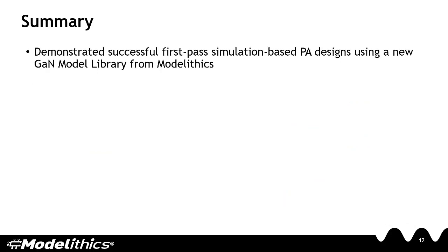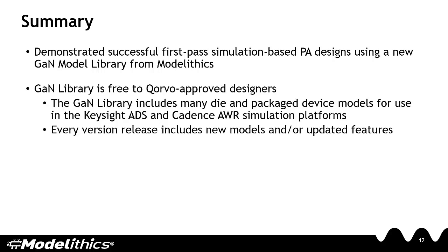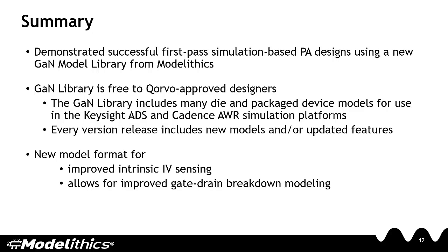In summary, PA designers can take advantage of the ModelLythics Corvo GAN library to achieve successful first-pass designs. The library is available for free for Corvo-approved designers and includes many die and packaged device models for use in both Keysight ADS and Cadence AWR. Be on the lookout for new models as well as updated features.